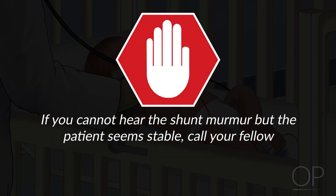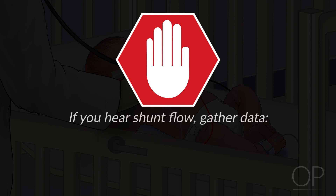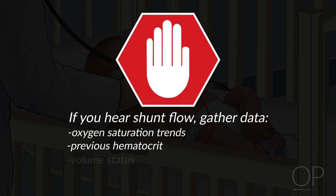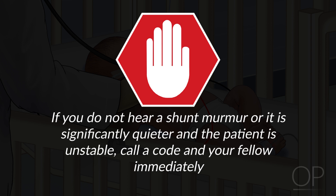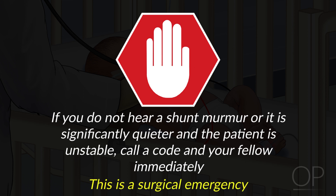If you suspect that you cannot hear the shunt murmur but the patient seems stable, call your fellow. If you feel comfortable that there is shunt flow, take some time to gather more data, including what the oxygen saturations have been during the day, the last hematocrit, the patient's volume status, any signs of respiratory illness, and review the last chest radiograph as another assessment of pulmonary blood flow. If you did not hear a shunt murmur or it is significantly quieter and the patient is unstable, call a code and your fellow immediately. This is a surgical emergency.